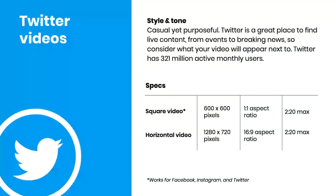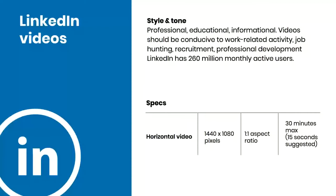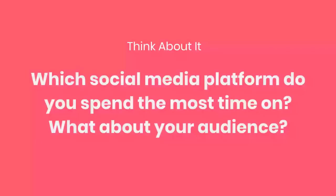Now let's talk about LinkedIn. LinkedIn is professional, educational, or informational — consider why somebody is there. They're there for work-related activity, job hunting, recruitment, and professional development. There are over 260 million monthly active users and it's continuing to grow and be effective for marketers. For horizontal video on LinkedIn, it's 1440x1080 with a 1:1 aspect ratio and a 30-minute max, but we suggest 15 seconds — these people are busy, we've got to get their attention and get out. Let us know in the chat: which social platform do you spend the most time on, and where is your audience hanging out?